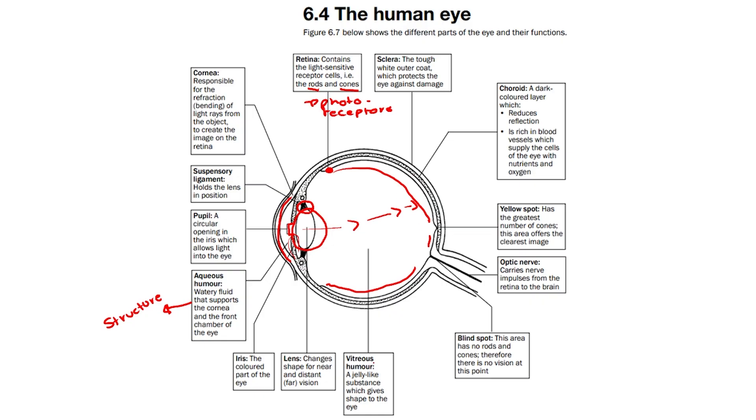We then have the vitreous humor, which is the liquid inside, behind the lens and in front of the retina. It is a jelly-like substance which gives shape to the eye, therefore also aids in structure.